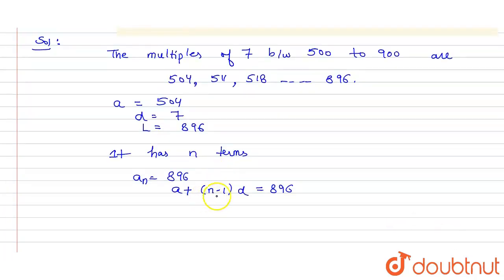From here, we will get the values of A and D. A is 504 plus, we don't know about N, so (N minus 1) and D is 7 here, which equals 896.